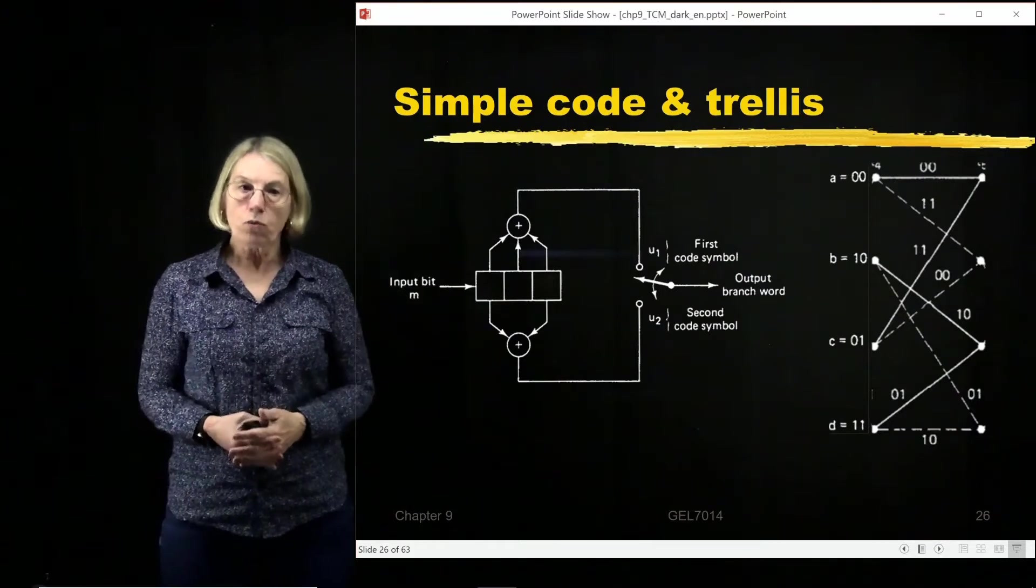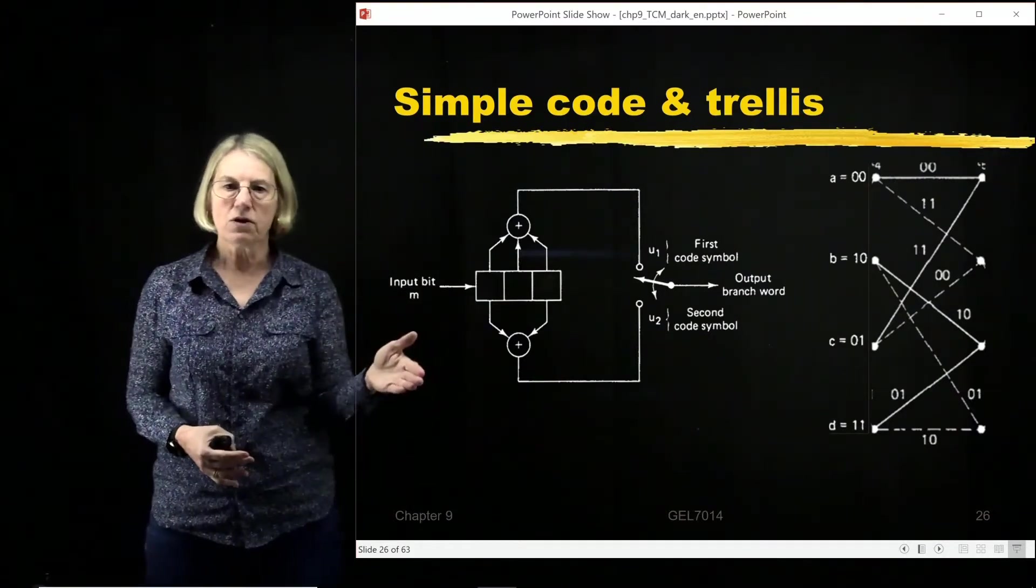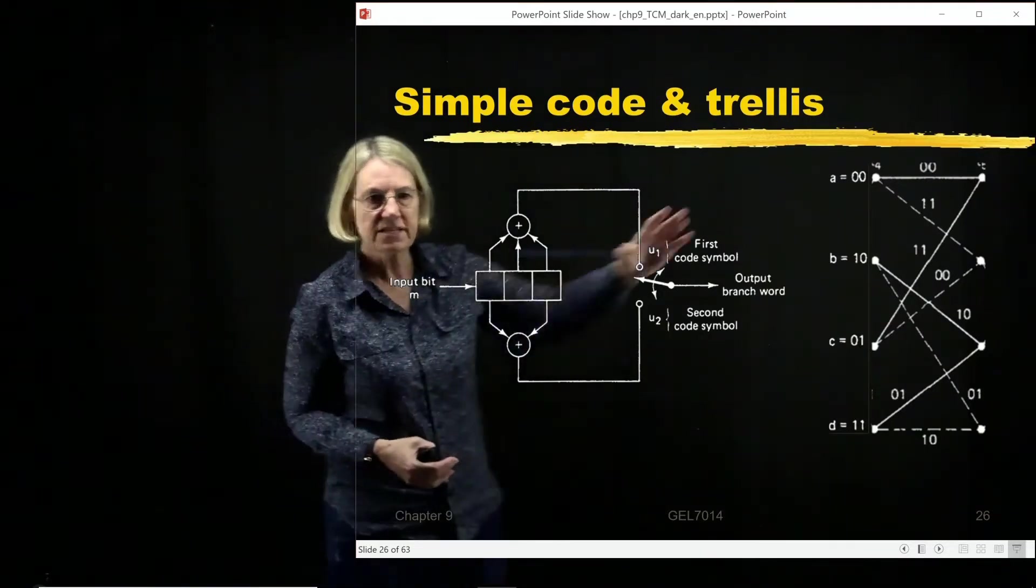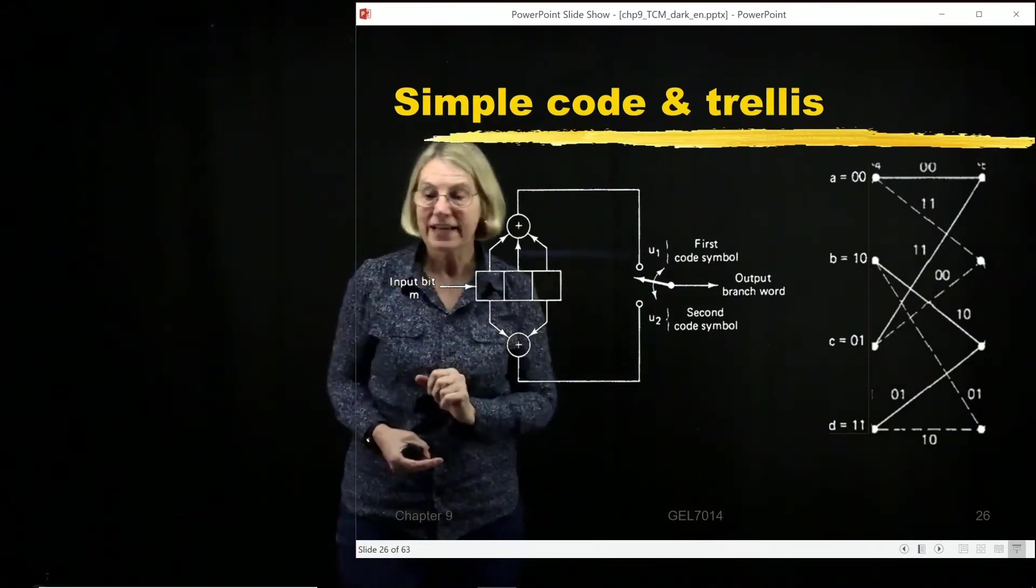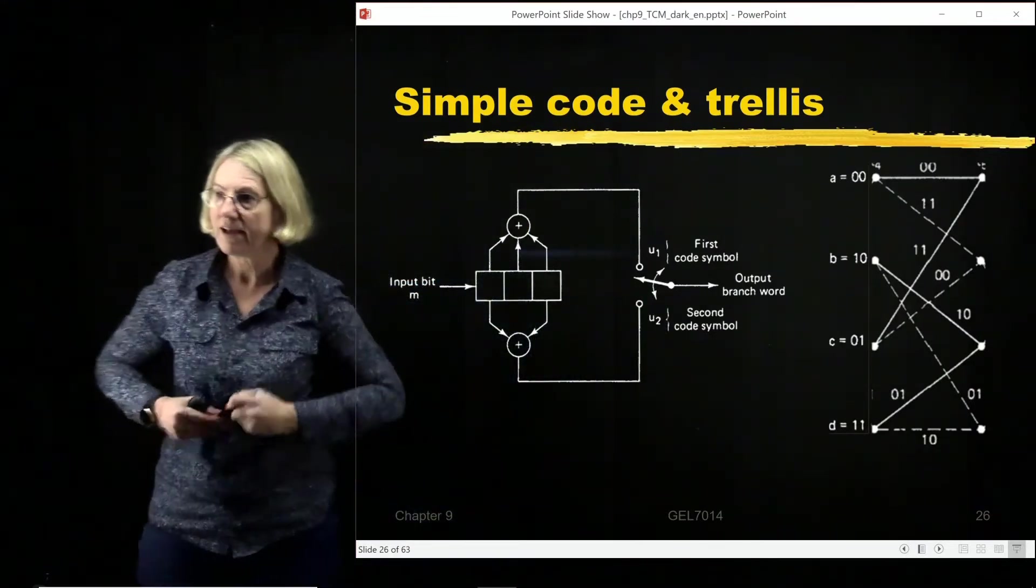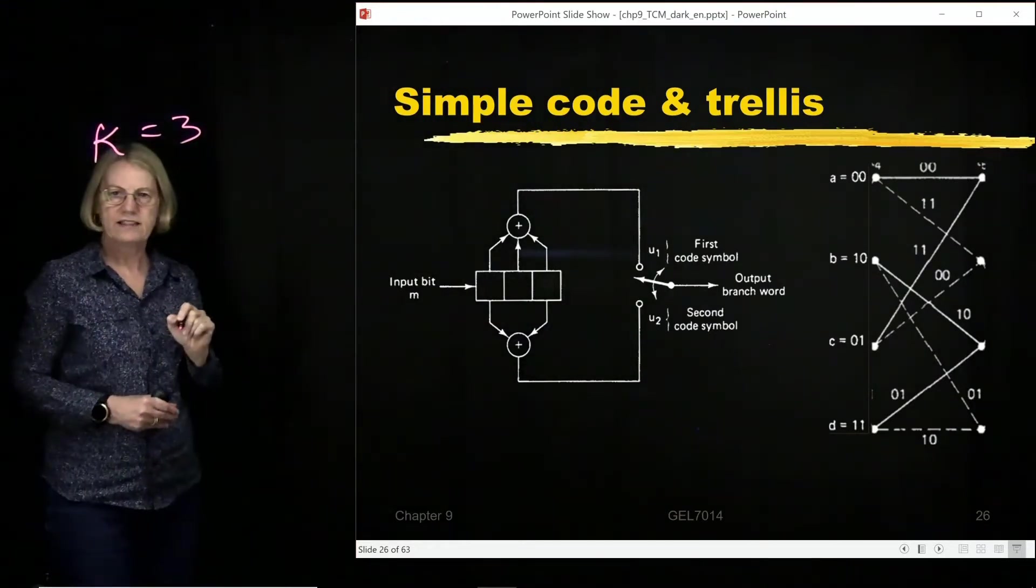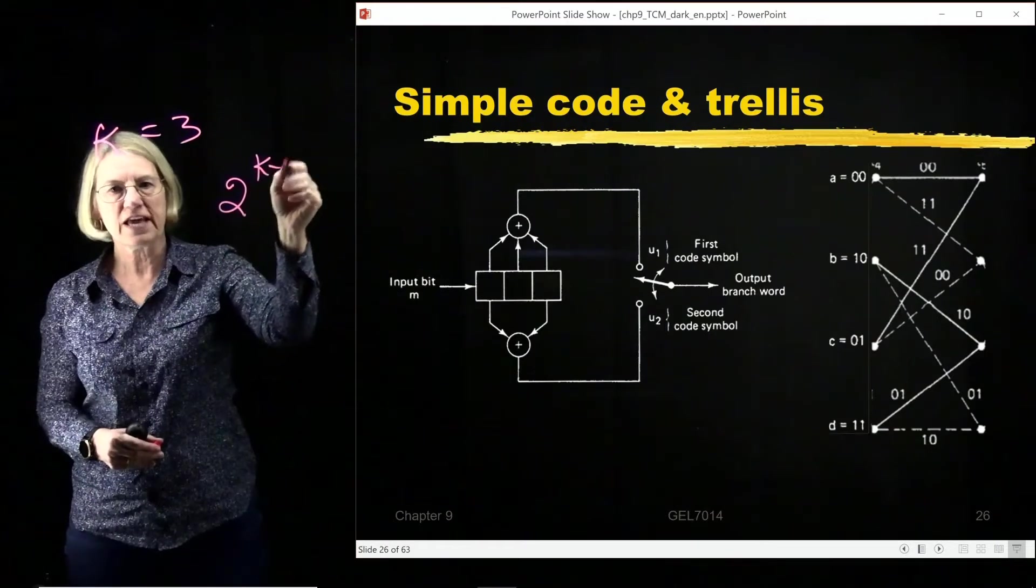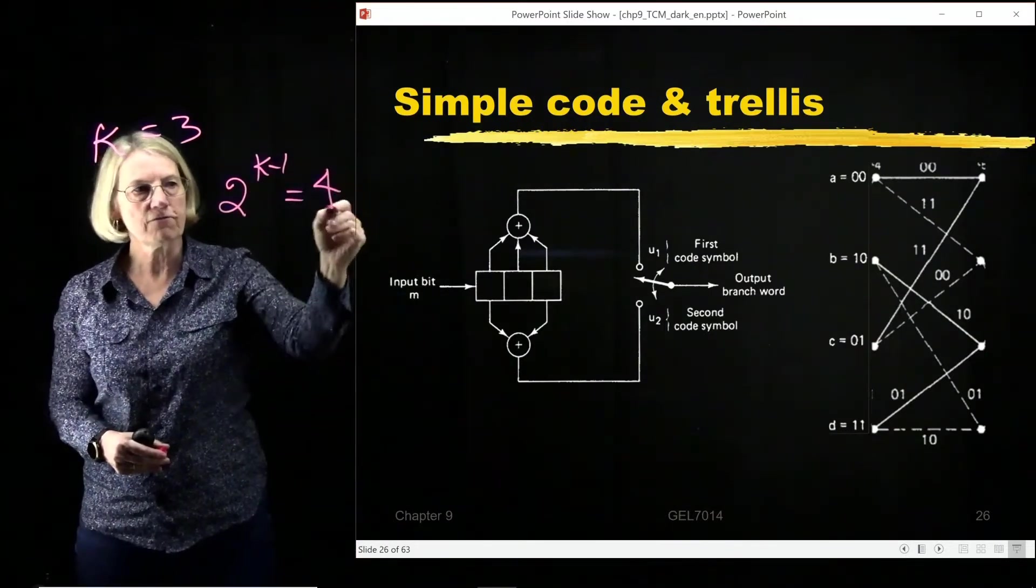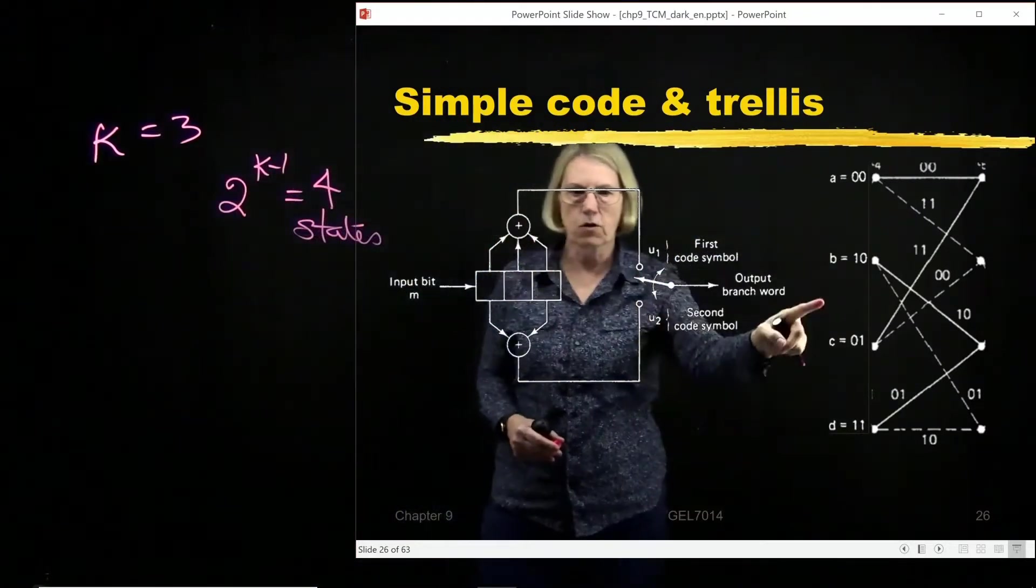So we saw already the trellis that is associated with this convolutional encoder. And this is the trellis. Of course, it's constraint length equal to 3. And for a constraint length equal to 3, we know that the number of states, 2 to the k minus 1. So there are four states. And so here we see the four states for this encoder.